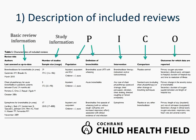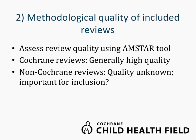This is an example of a characteristics of included reviews table taken from our bronchiolitis overview — interventions for bronchiolitis in infants. You can see it starts with basic review and study information, followed by information about participants and the disorder, and then general information about interventions, comparators, and outcomes. The advantage of this table format is that it allows you to easily compare review characteristics across included reviews, and the in-text descriptions complement the table for information not captured there.